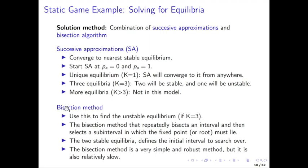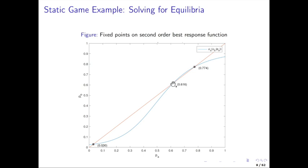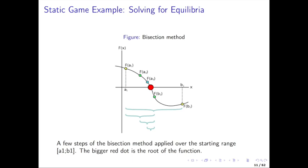To find the unstable equilibrium in the middle, you can use the bisection method. The bisection method repeatedly bisects an interval and selects the sub-interval in which the fixed point must lie. The two stable equilibria define the interval to search over. You start searching on the interval from A to B, take the midpoint, determine whether the function value is above or below zero, and use that information to determine which half contains the solution. You then keep halving the interval until you converge to the desired numerical precision.